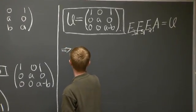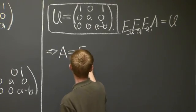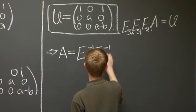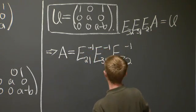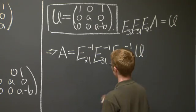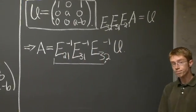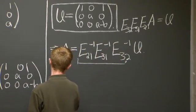So what do we have? We have A equals E₂₁ inverse, E₃₁ inverse, E₃₂ inverse times U. And this is our L, this product of these three matrices. So let's compute it now.